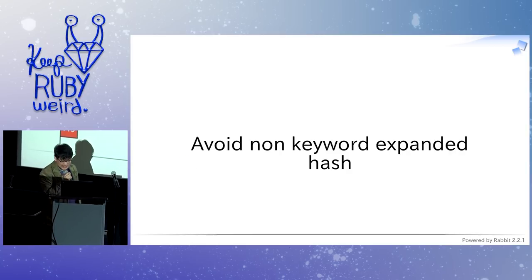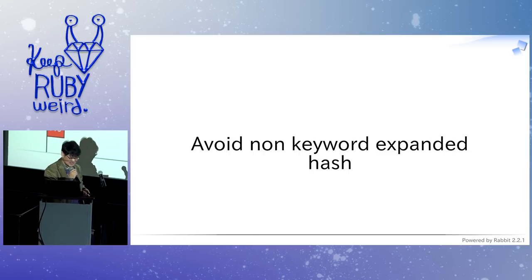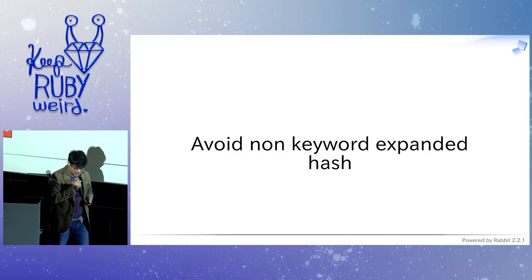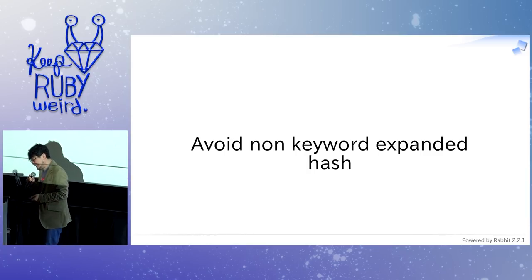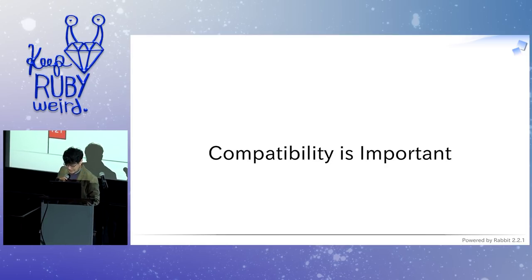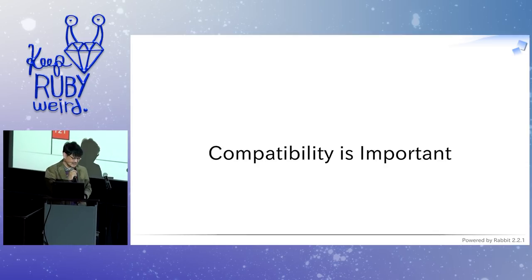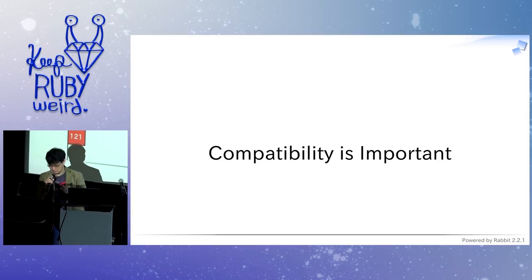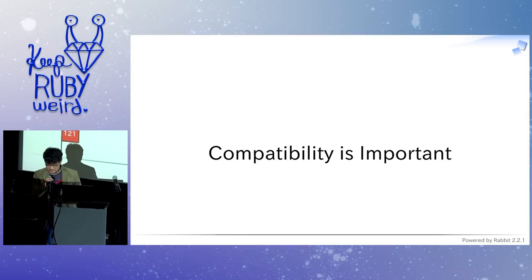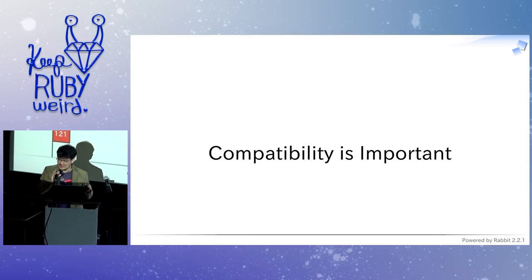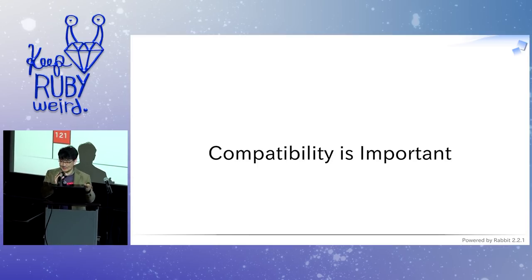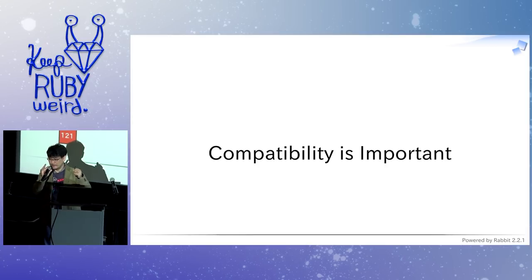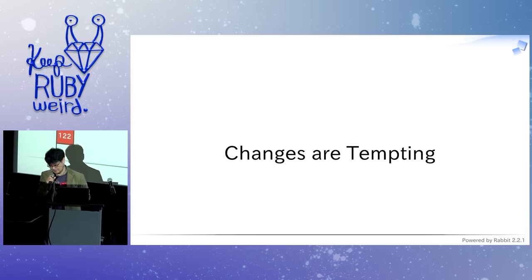In any way, I tell you: avoid non-keyword expanded hashes in your Ruby program, and when you get back home, fix them. In summary, compatibility is pretty much important. Because if your language, or your library, or your framework, or whatever third-party thing breaks compatibility, you will be punished for no reason. It's a kind of pain, so don't do that — unless you have a very apparent reason. Changes are very tempting.